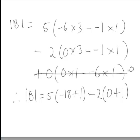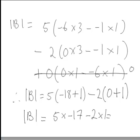That last part is just 0 in this particular case. Therefore, the determinant of B is 5 times negative 17 minus 2 times 1, which becomes negative 85 minus 2, giving negative 87.